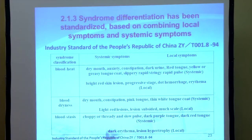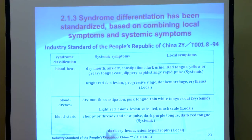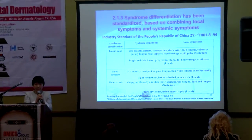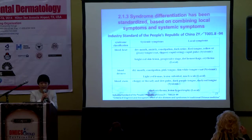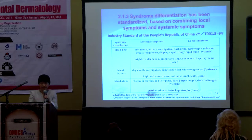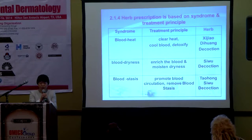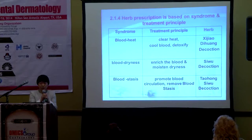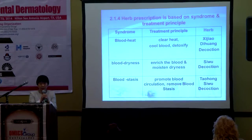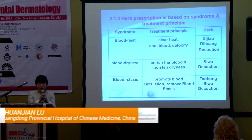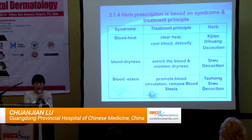There are international criteria to help doctors do syndrome differentiation, which is based on combining local and systemic symptoms. The syndrome classification may include blood heat, blood dryness, and blood stasis. According to the identified syndrome, the doctor can choose the treatment principle and choose herbs to form a prescription. For example, when a doctor identifies a syndrome belonging to blood heat, he may choose clear heat, cool blood, and detoxify as the principle, and a formula such as CJILD-1 is mainly used in clinical work for this syndrome.